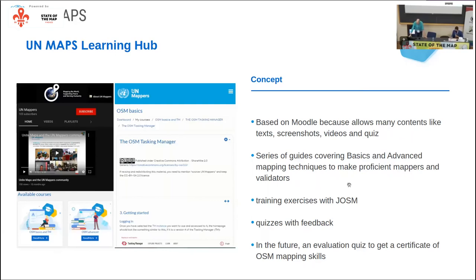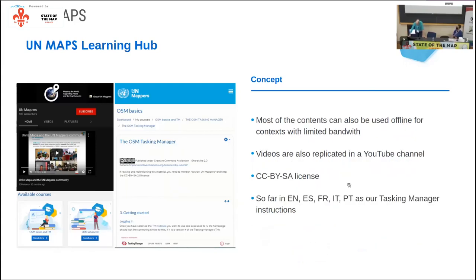We aim to provide this material to make proficient mappers and validators helping us to map OpenStreetMap. You will have training exercises with JOSM, and you will find quizzes with feedback. Content can also be used offline — as we train people in areas with limited bandwidth, materials can be downloaded as PDF. Everything is CC BY SA, so it's totally free. Videos are also replicated on our YouTube channel.